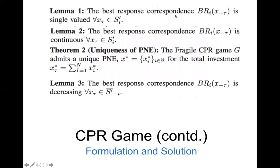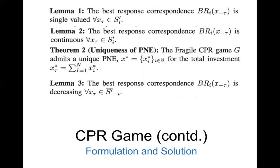The paper also proposes several lemmas. For example: the best response of user i will be single-valued; the best response of user i is continuous; and the authors have shown that the pure Nash equilibrium point for this formulation is unique — meaning there is only one way this pure Nash equilibrium point can be achieved. The best response is decreasing because when the aggregate investment of all users increases, the response from the next user will decrease.